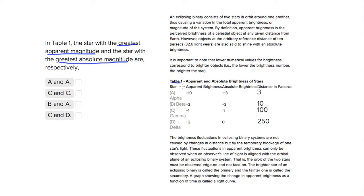Let's look at our table. We have our apparent brightness, which corresponds to our apparent magnitude, and our absolute brightness.